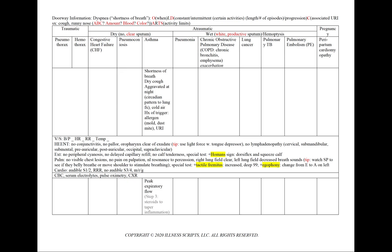In asthma, our supporting points can include shortness of breath and dry cough, aggravated at night because there is a circadian pattern to lung function, or by cold air. Our patient can note a history of triggers such as allergens — either mold or dust mites — or a recent URI. We'll order a peak expiratory flow, and the treatment for an asthma flare includes steroids.